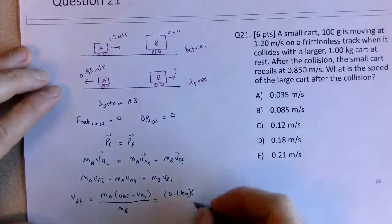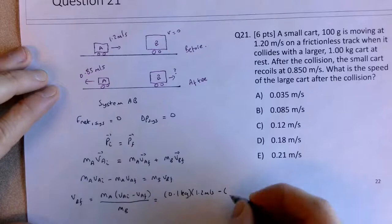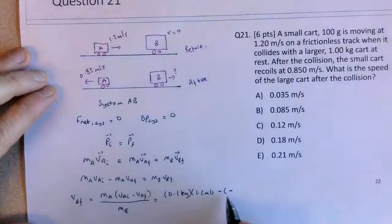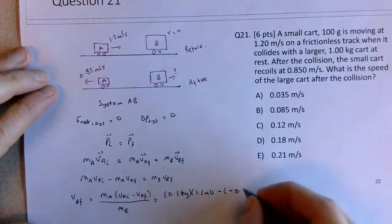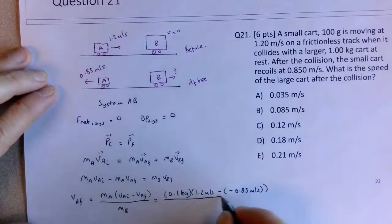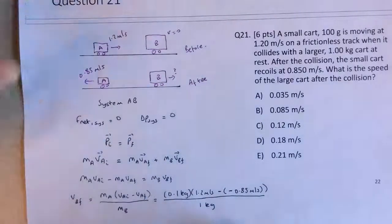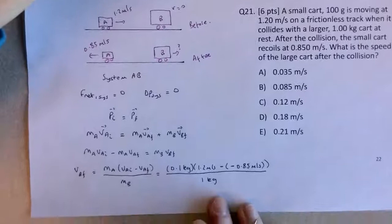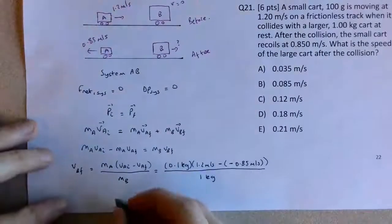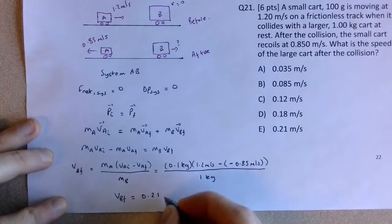Initial speed or initial velocity of A is 1.2 meters per second, minus the final velocity, and this is where you need your second minus, 0.85 meters per second, all divided by the mass of B, which is a kilogram.